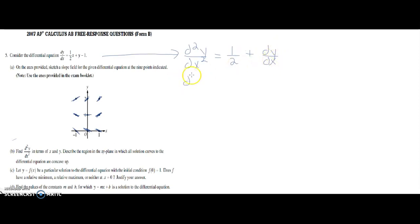Now you're going to substitute. d2y over dx squared is going to equal one-half plus, well we know dy over dx equals this over here, so now we're going to write one-half x plus y minus one.